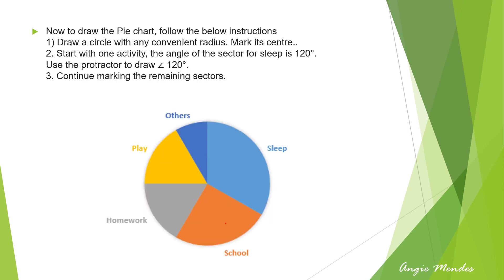To draw the pie chart, first draw a circle with any convenient radius, marking its center. Start with one activity — for sleep the angle is 120 degrees. Using a protractor placed at the center point, draw an angle of 120 degrees and mark it. In the same way, place the protractor at the center point again and mark the angle for the next activity obtained in the previous step, continuing until all activities are represented.